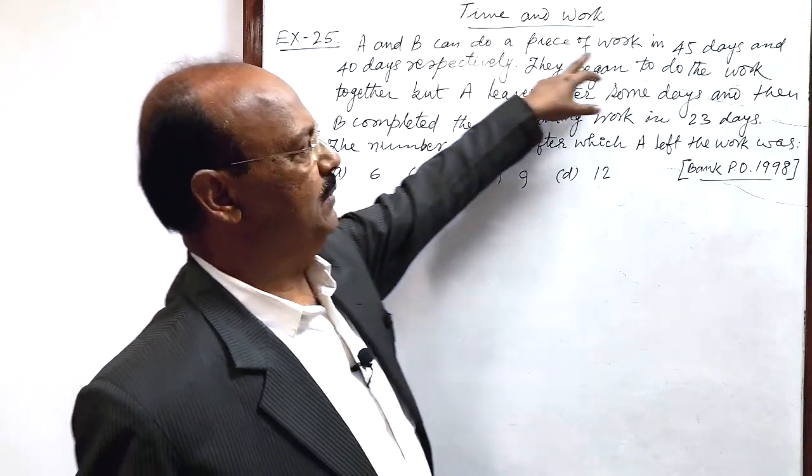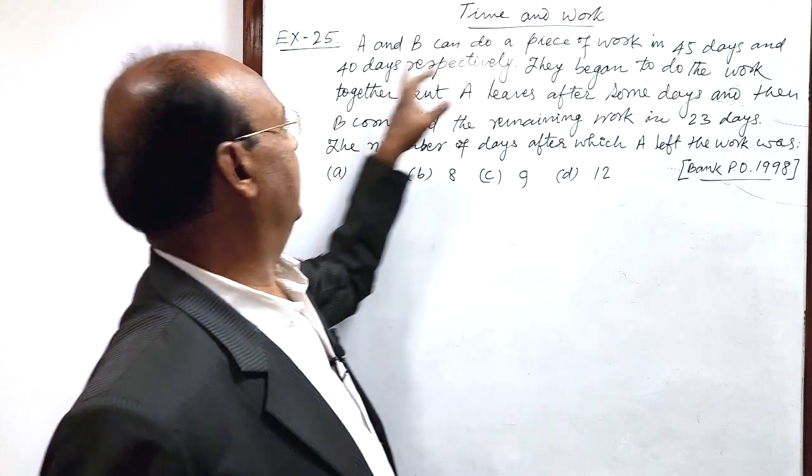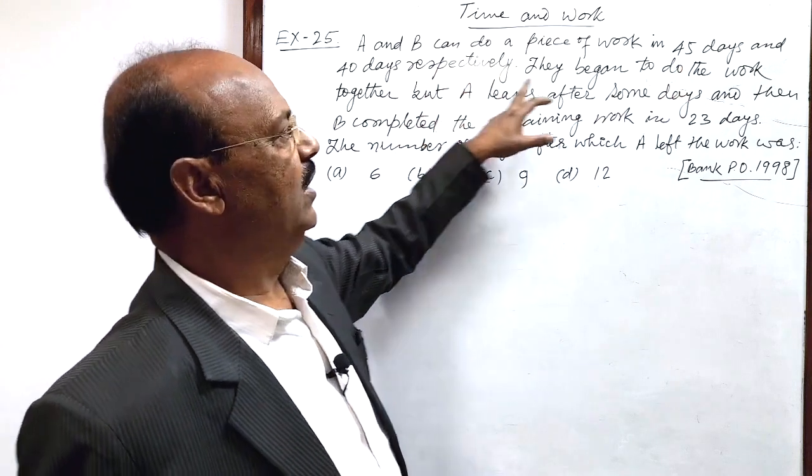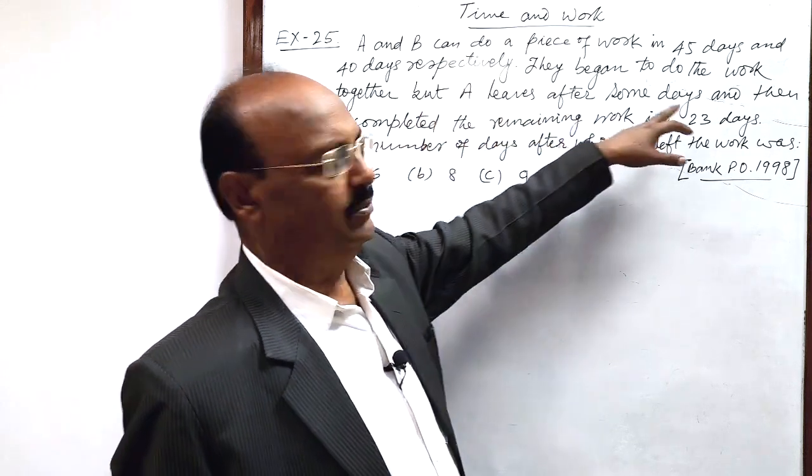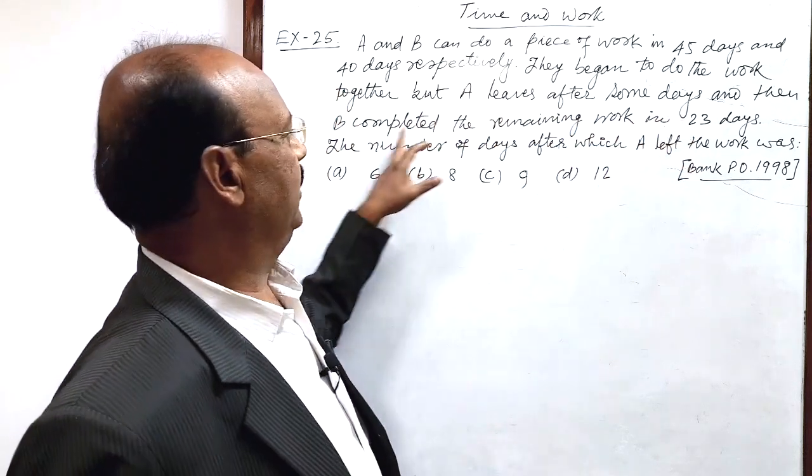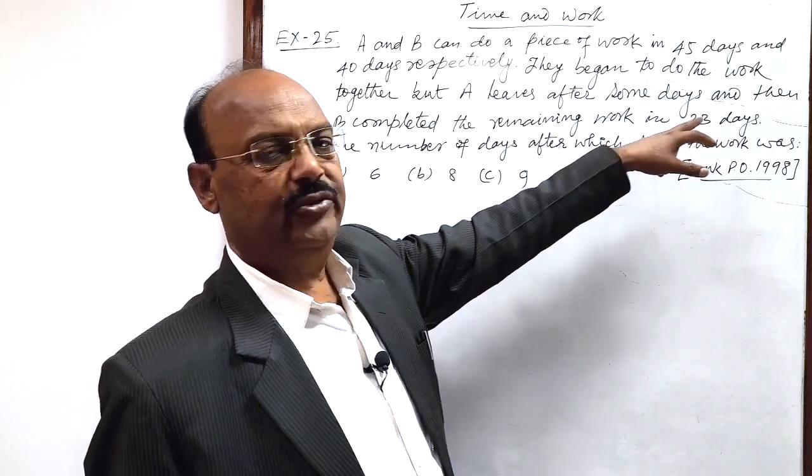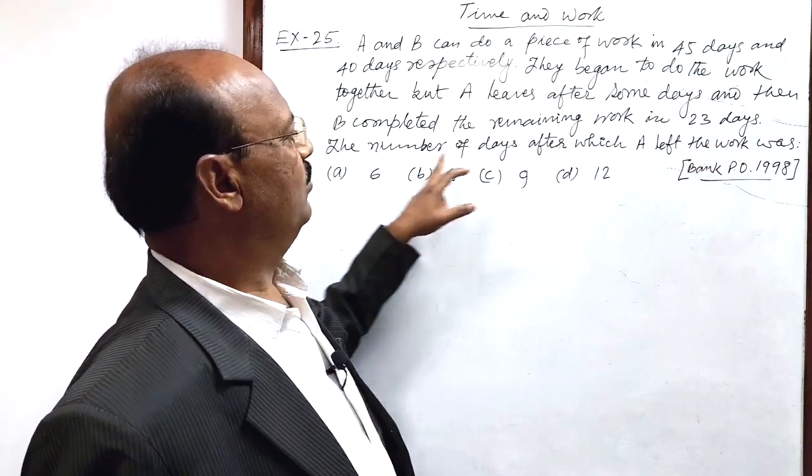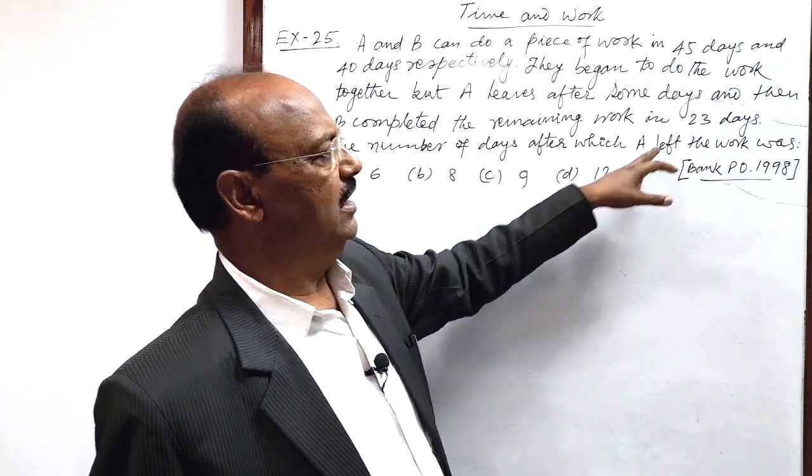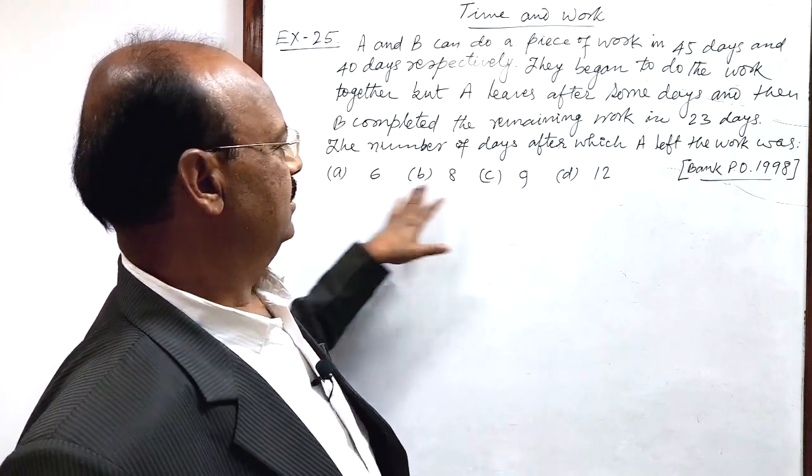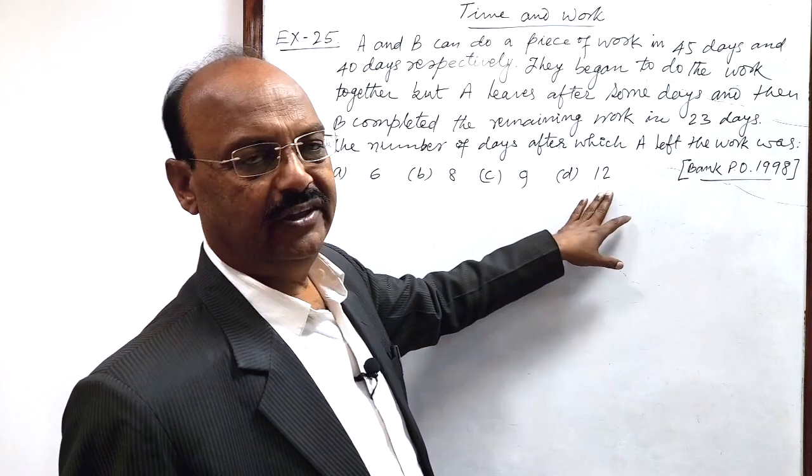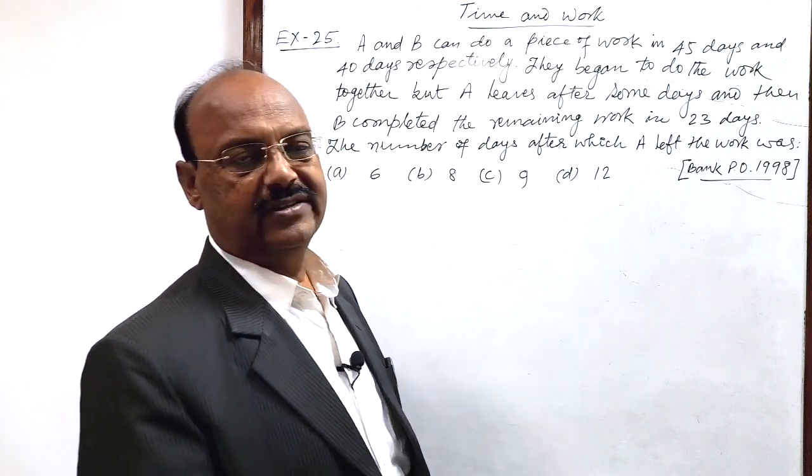The question is: A and B can do a piece of work in 45 days and 40 days respectively. They begin to do the work together, but A leaves after some days, and then B completed the remaining work in 23 days. The number of days after which A left the work was how many days? 6, 8, 9 or 12. We have to select the correct answer.